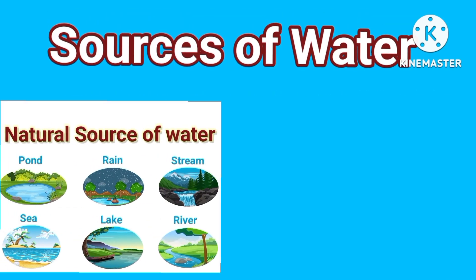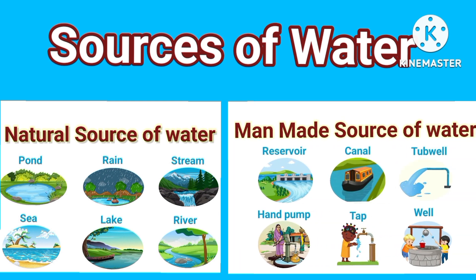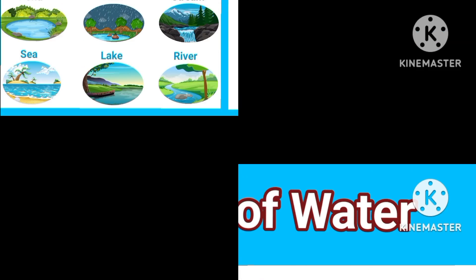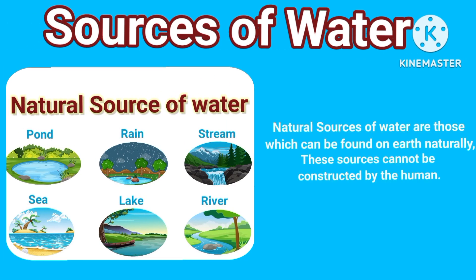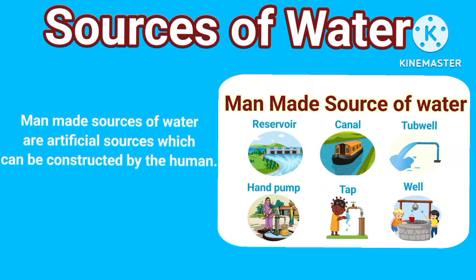Sources of Water. Today we learn about Natural Sources of Water and Man-made Sources of Water. Natural sources of water are those which can be found on earth naturally. These sources cannot be constructed by humans. Man-made sources of water are artificial sources which can be constructed by humans.